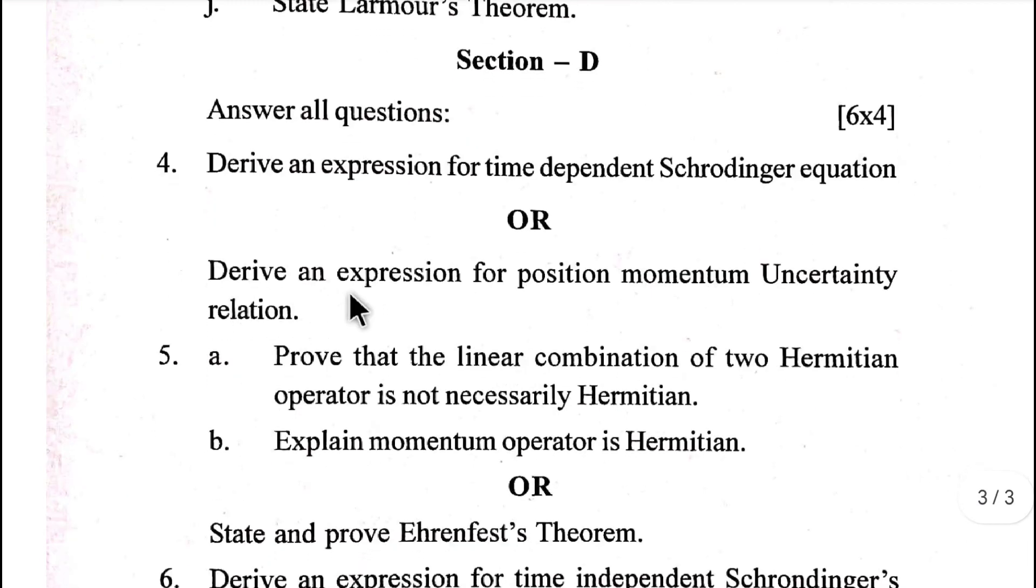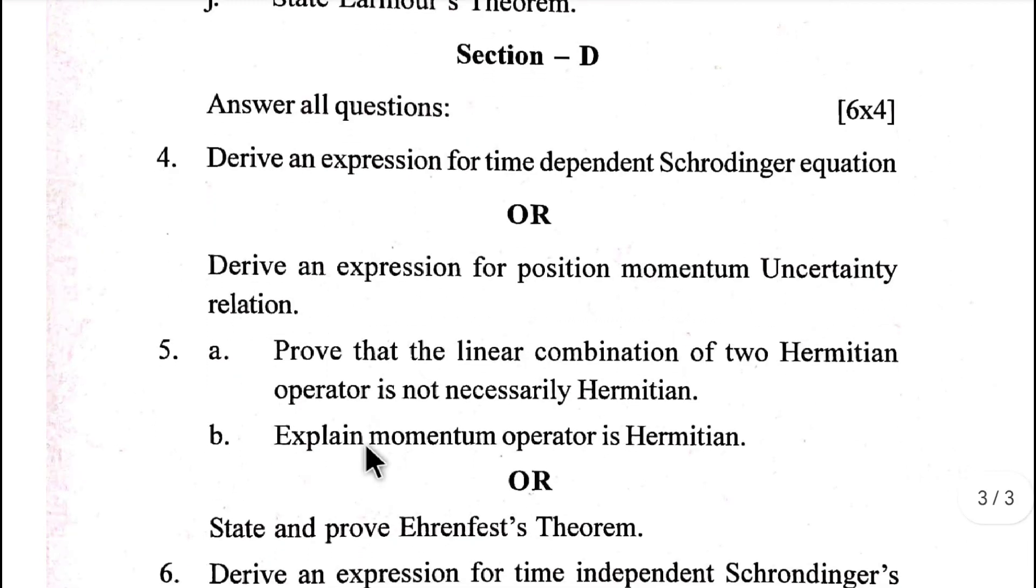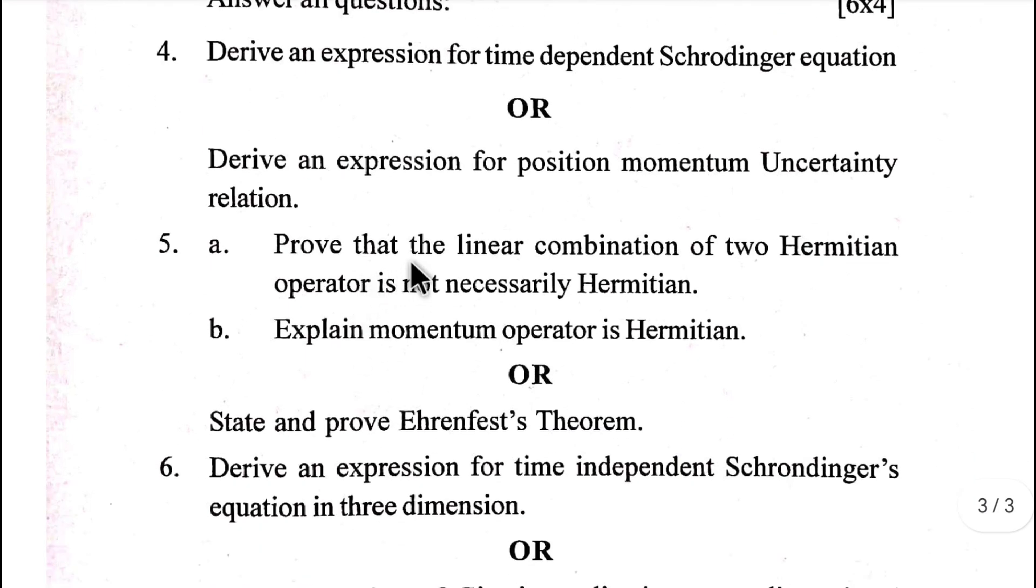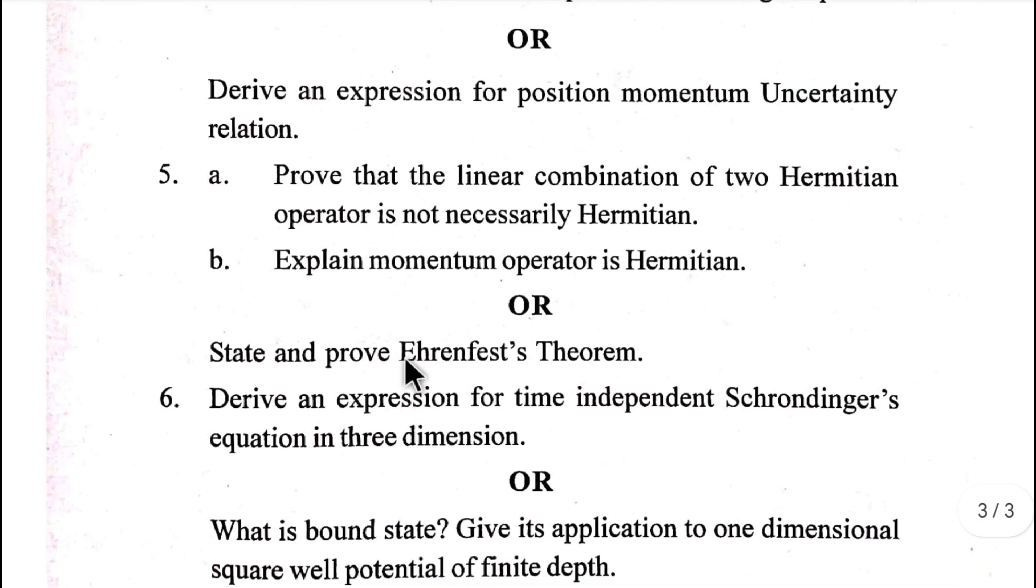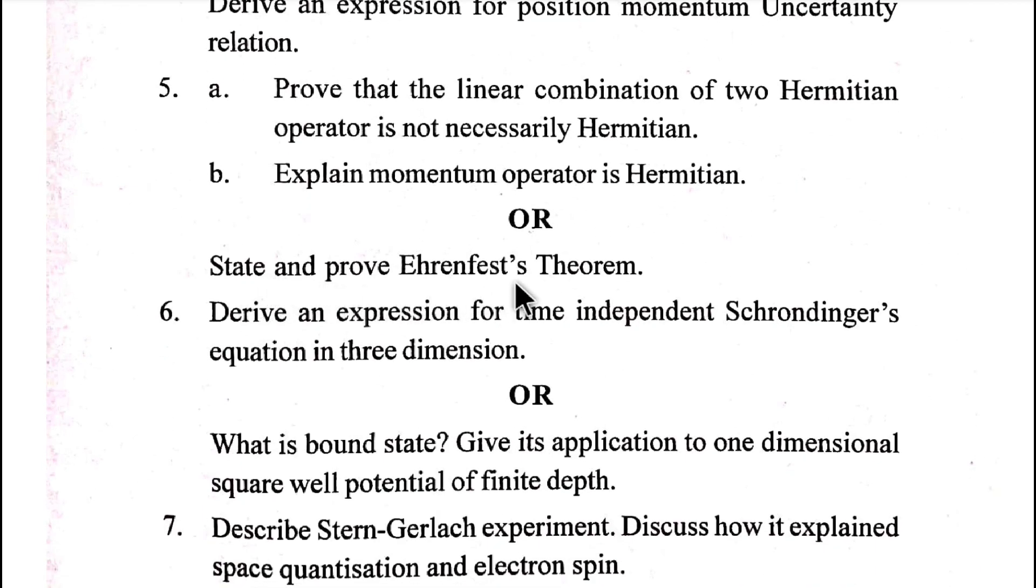Derive an expression for time-dependent Schrödinger equation. Derive an expression for position-momentum uncertainty relation. Prove that the linear combination of two Hermitian operators is not necessarily Hermitian. Explain momentum operator is Hermitian. State and prove Ehrenfest's theorem.